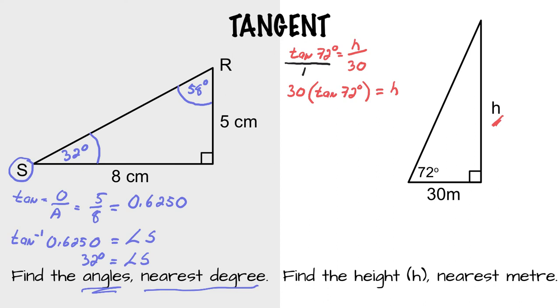Again, figure out if you can go 30 times tan 72, or if you have to do tan 72 first and then multiply by 30. Whichever way you go, you should get this result.